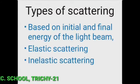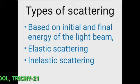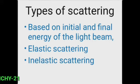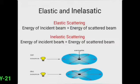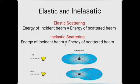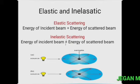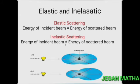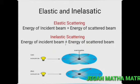When a beam of light interacts with the constituent particles of the medium, it undergoes many kinds of scattering. Based on the initial and final energy of the light beam, scattering can be classified as elastic scattering and inelastic scattering. If the energy of the incident beam and the scattered beam are the same, it is called elastic scattering. If they are not equal, it is called inelastic scattering.